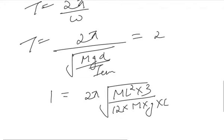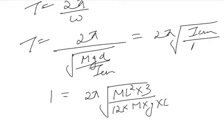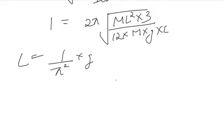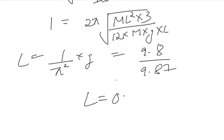This comes out to be 2π square root of ML squared by 12 upon MG times L by 3. Simplifying, L will come out to be 1 upon π squared into G, and this comes out to be 9.8 upon π squared, which is 9.87, so the length comes out to be 0.9929 meters. This was the final answer. Thank you.